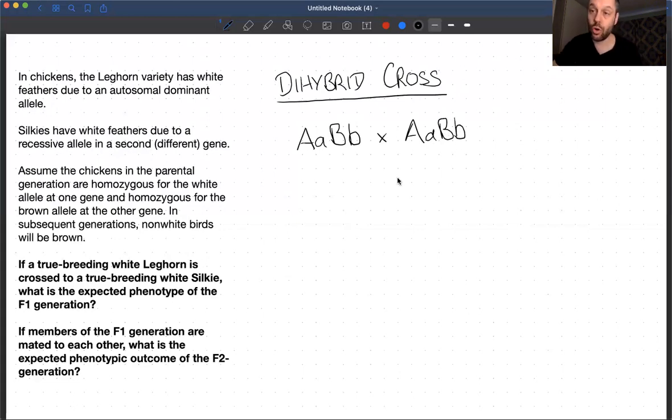And if I was to draw a Punnett square for this cross, I would end up with 16 different boxes, as you guys know. And the ratio of different phenotypes I would see would be of course the classic nine, three, three, one ratio of 16. There will be 16 different possibilities. Nine of them would all look one way. Three would look another way. Three would look another way. And one of course would look another way.